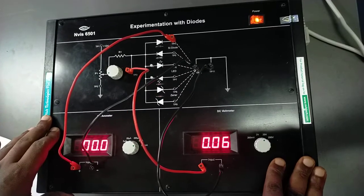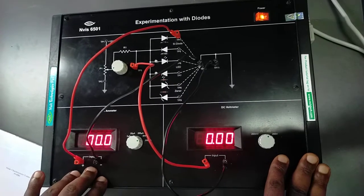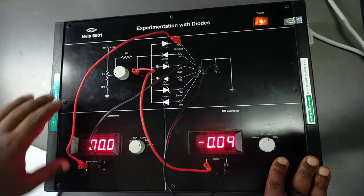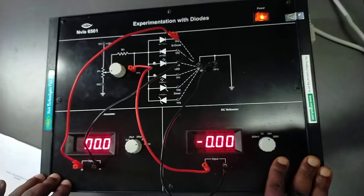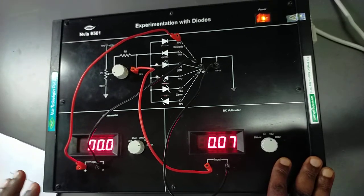Here we have an experimentation with diodes kit, and I have connected an ammeter and voltmeter across the silicon diode. Let's start to see its forward bias characteristics.